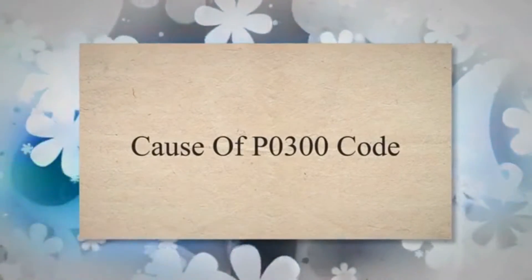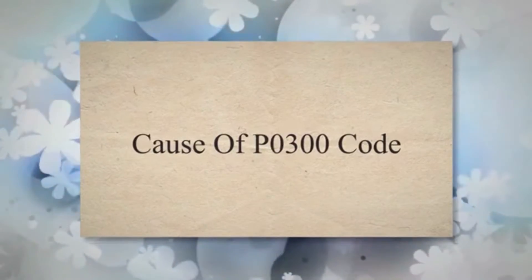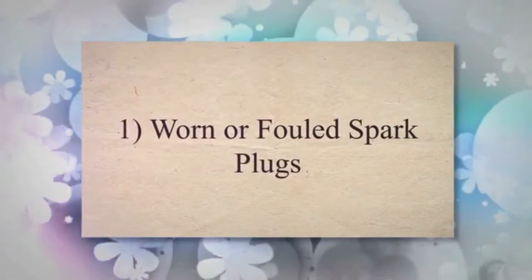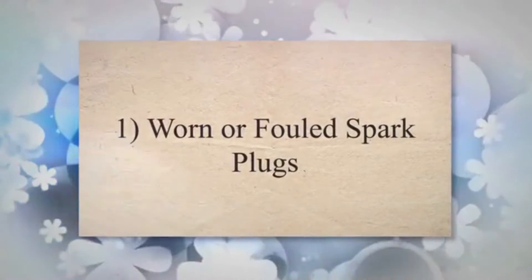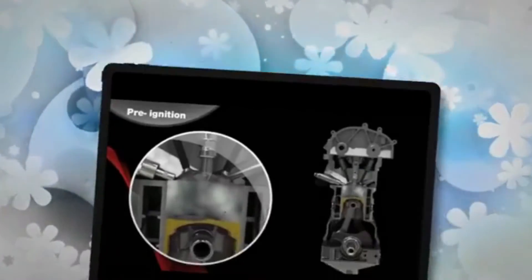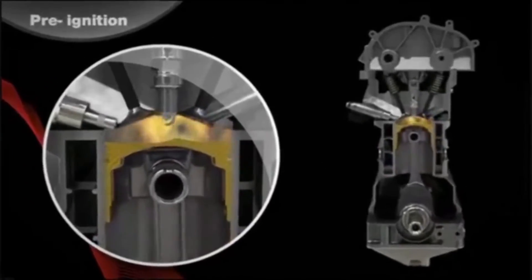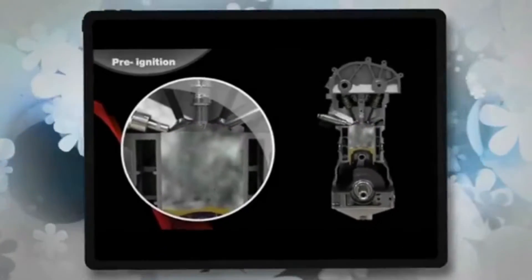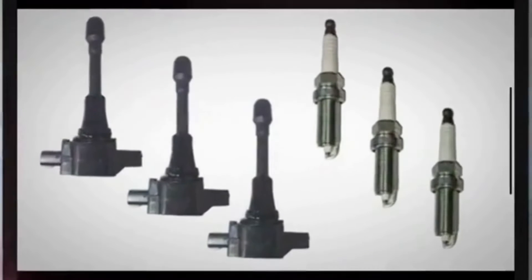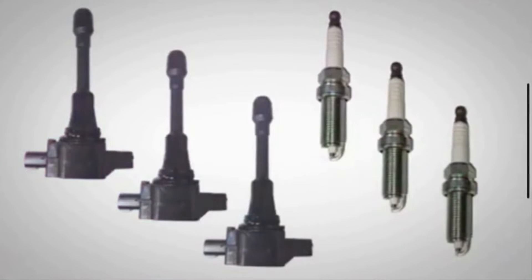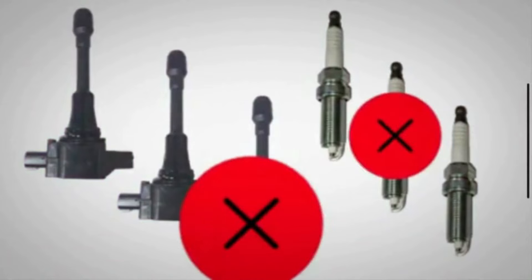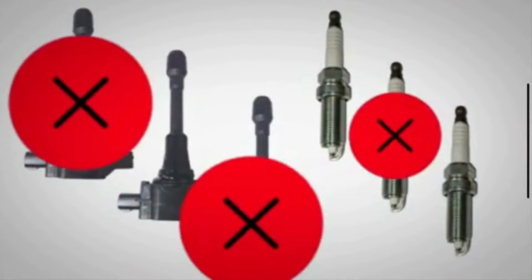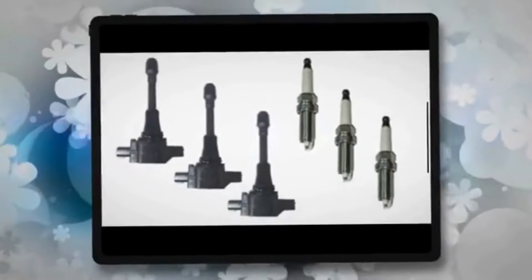Causes of the PO300 code. 1. Worn or fouled spark plugs. The main function of the spark plug is to properly produce the sparks to ignite the air-fuel mixture. Over time, spark plugs can wear out or become fouled with carbon deposits. A bad spark plug doesn't produce sufficient sparks, which can lead to inefficient combustion and misfires.